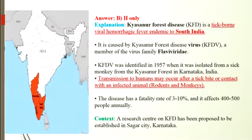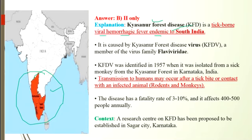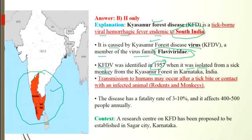Kyasanur Forest Disease is endemic to South India, not the whole Indian subcontinent. It is a tick-borne viral hemorrhagic fever caused by Kyasanur Forest Disease Virus, a member of the virus family Flaviviridae. KFDV was identified in 1957 and isolated from a sick monkey in a forest in Karnataka. Transmission to humans may occur after a tick bite or contact with an infected animal such as rodents or monkeys. The disease has a fatality rate of 3 to 10 percent and affects 400 to 500 people annually. A research center on KFD has been proposed in Kagar city of Karnataka.